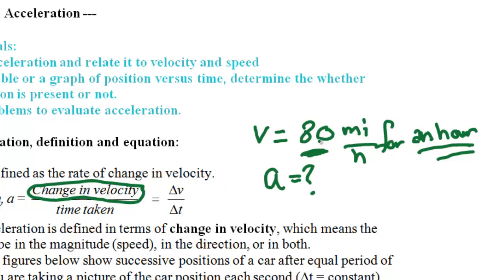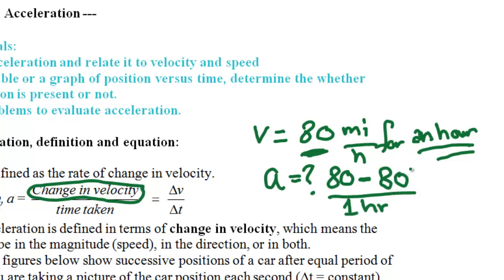To calculate the acceleration during this hour, the change in velocity is the final velocity — which is 80 miles per hour — minus the initial velocity, which is also 80, divided by one hour. The answer is zero. This car has no acceleration because there is no change in velocity during this hour. The car was moving at constant velocity. Of course, if the car changes velocity, then there will be acceleration.